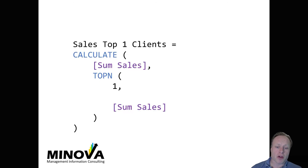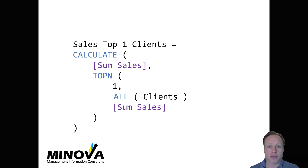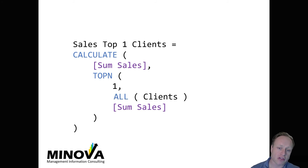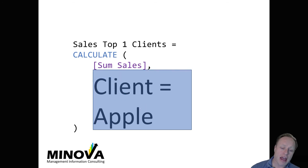What we're going to do is specify that we want to have that TopN based upon all clients — not just the client coming out of the row header having been entered into the filter context. We don't only want to have that client; we want to have this evaluation based upon all clients. So this is when we need to use the formula ALL. And now the result is going to be Apple.